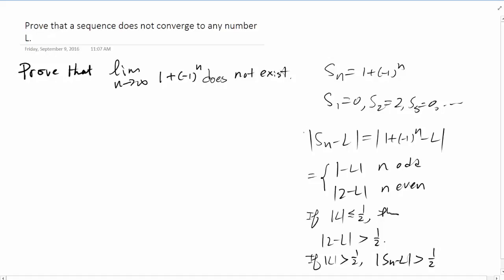So for this L, the absolute value cannot be less than or equal to 1/2 for all n when n is large. That's our analysis, and we're going to write it down. Let's write down the proof.